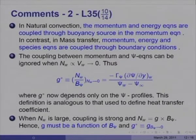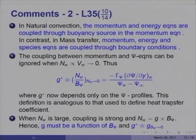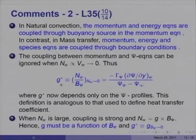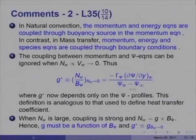This definition is analogous to that used to define the heat transfer coefficient, which is defined as minus k dT/dy divided by (T_W minus T_∞). Likewise, G*, the mass transfer coefficient at V_W equal to zero, is minus γ_ψ (dψ/dy at W) divided by (ψ_W minus ψ_∞). The two definitions are now analogous, and this is why we have been calling G the mass transfer coefficient.